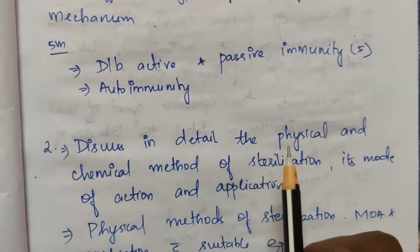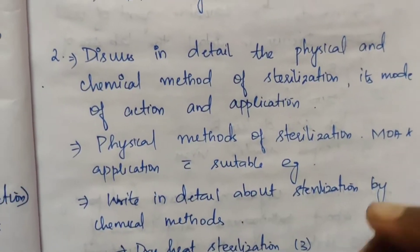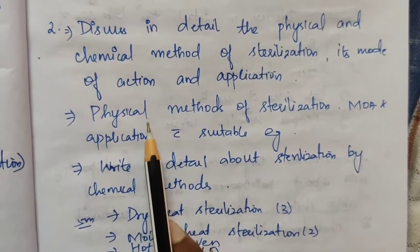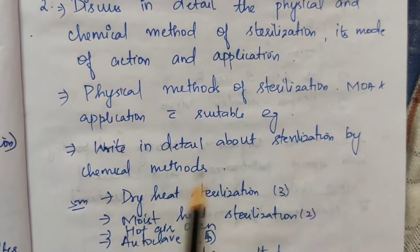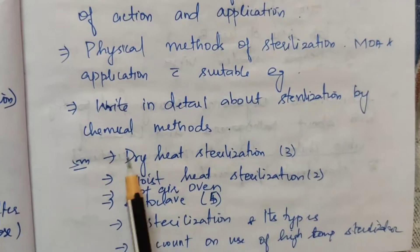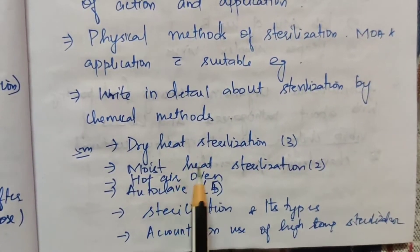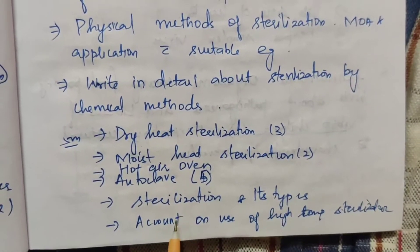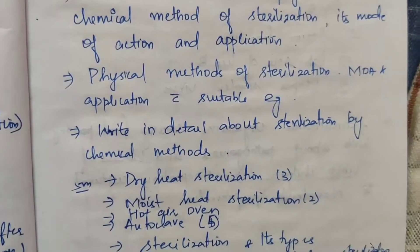Next, sterilization is a very important topic. Discuss in detail the physical and chemical methods of sterilization, its mode of action, and application. Physical methods of sterilization — mechanism of action and application with suitable example — is the second question. Write in detail about sterilization by chemical methods. Dry heat sterilization has appeared 3 times, moist heat sterilization 2 times, hot air oven, autoclave, and sterilization and its types including high temperature sterilization.